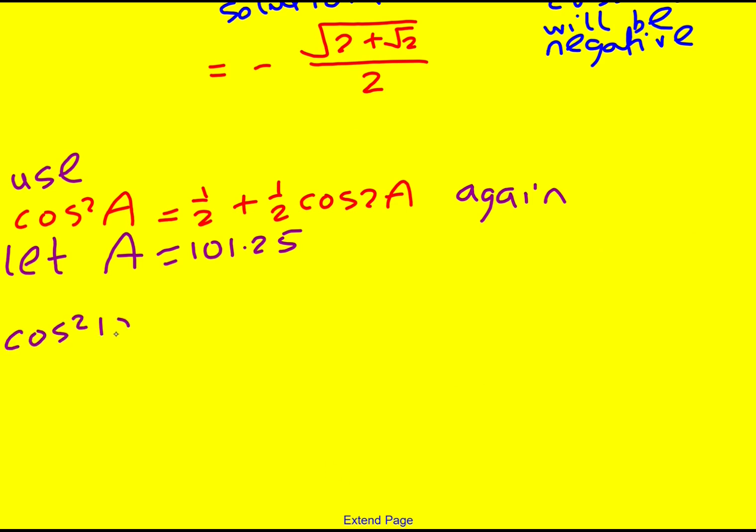So cos² 101.25° is going to equal a half. I could have factorized out the half already, but I'm not going to. I'm going to leave it like this. A half plus a half times minus root 2 plus root 2 over 2.